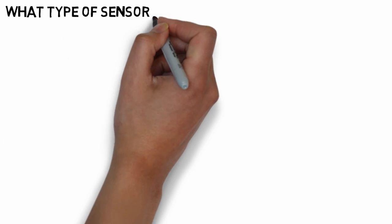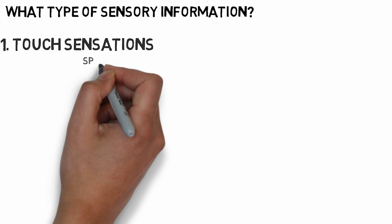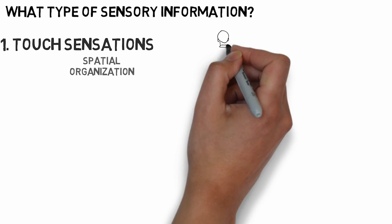Now let's understand what type of sensory information does the dorsal column pathway transmit. The first and most important are the touch sensations, especially the fine touch. There are certain properties of touch sensations that are only present due to spatial organization of the nerve fibers in the dorsal column pathway.